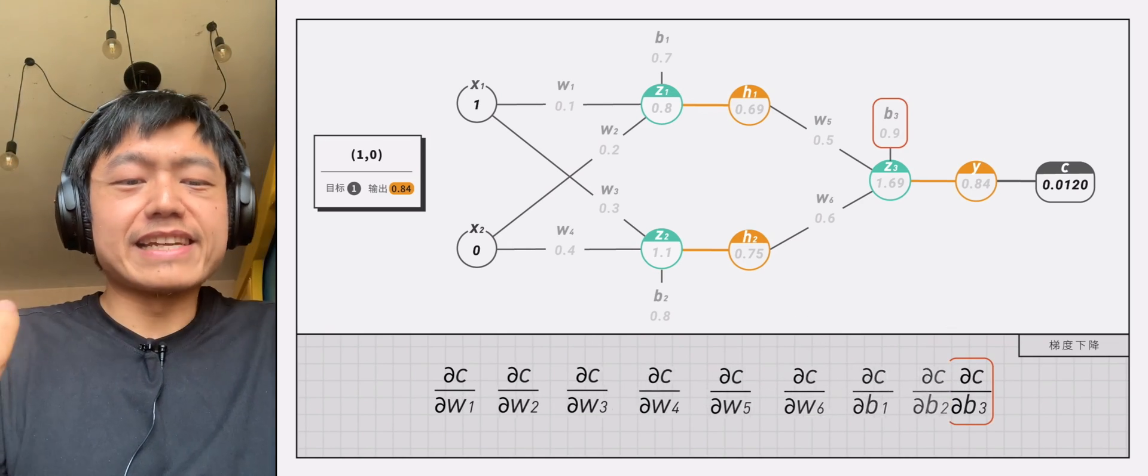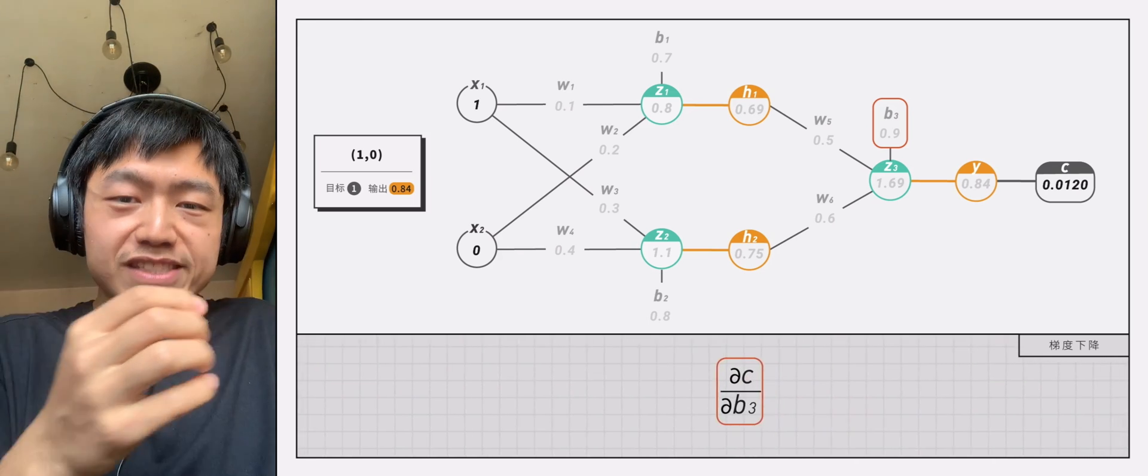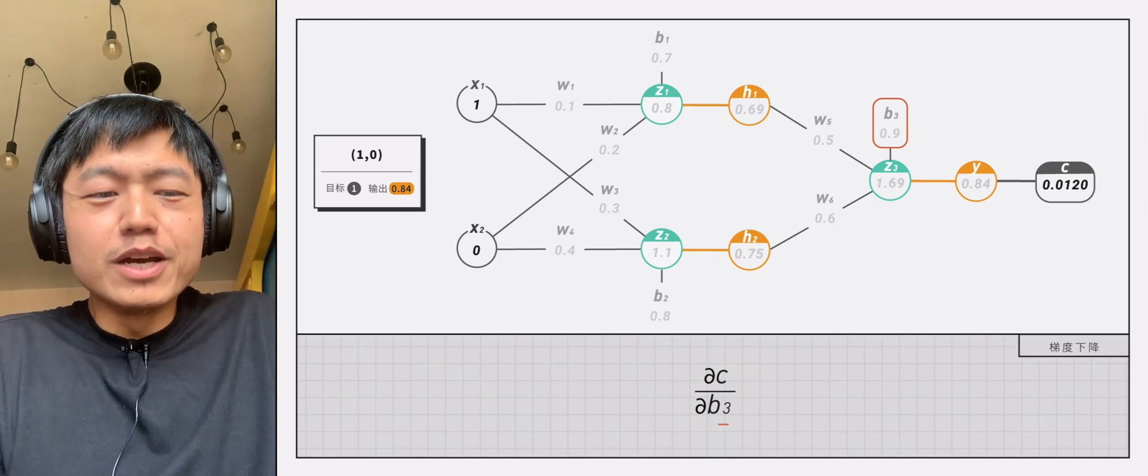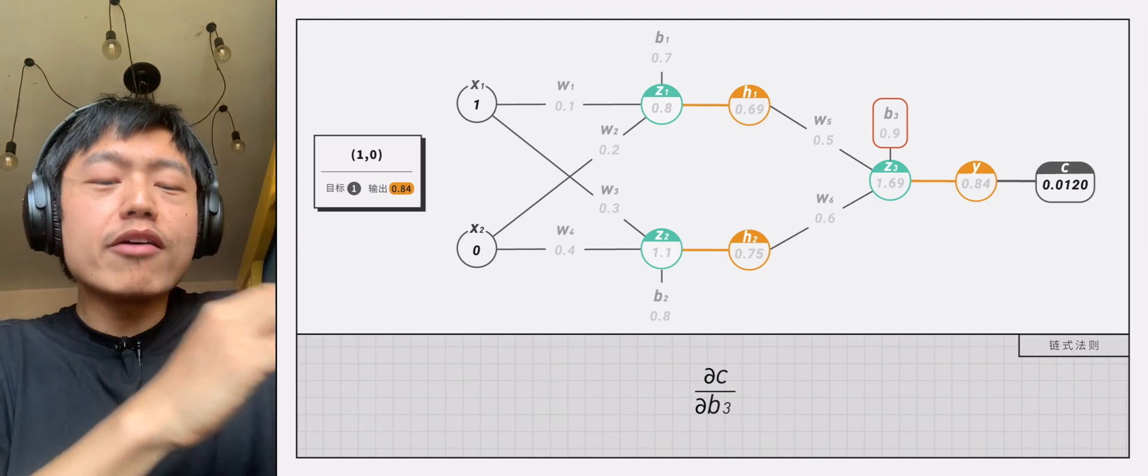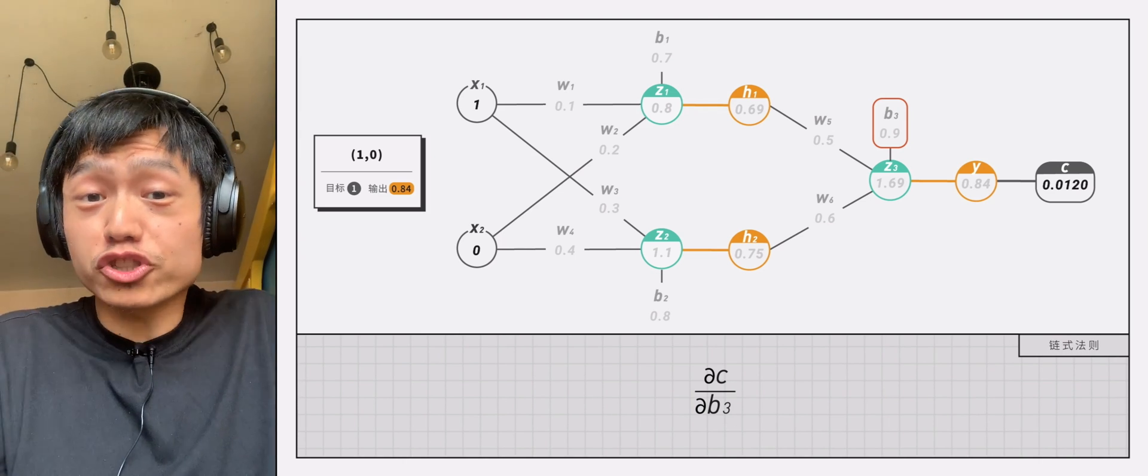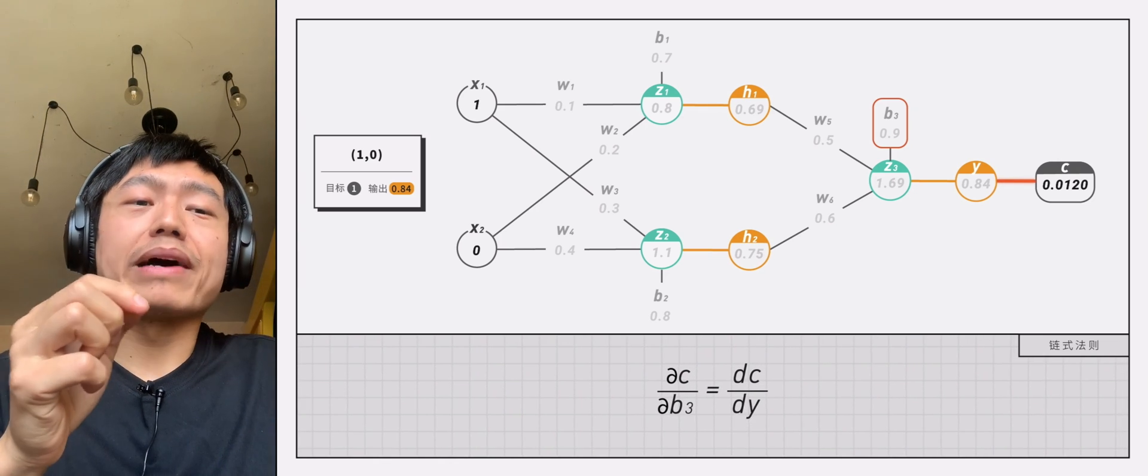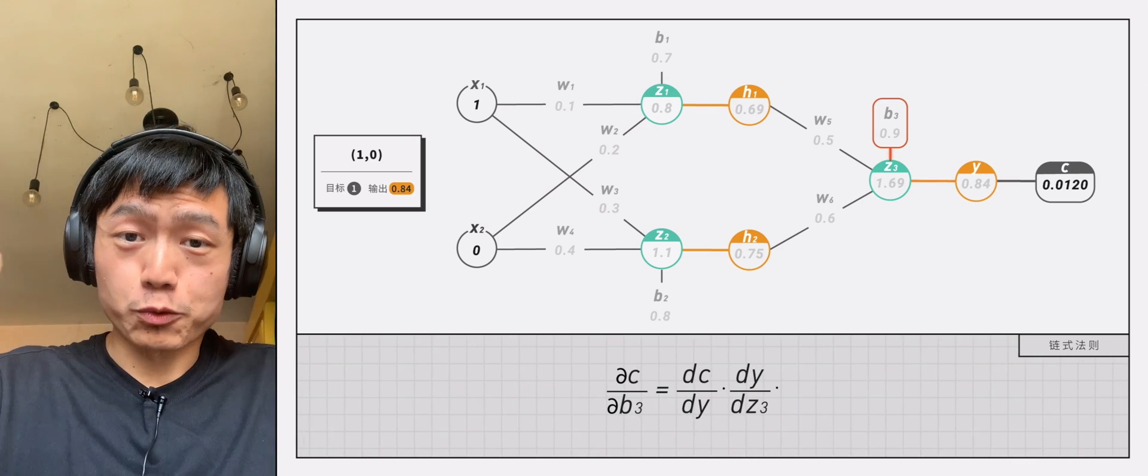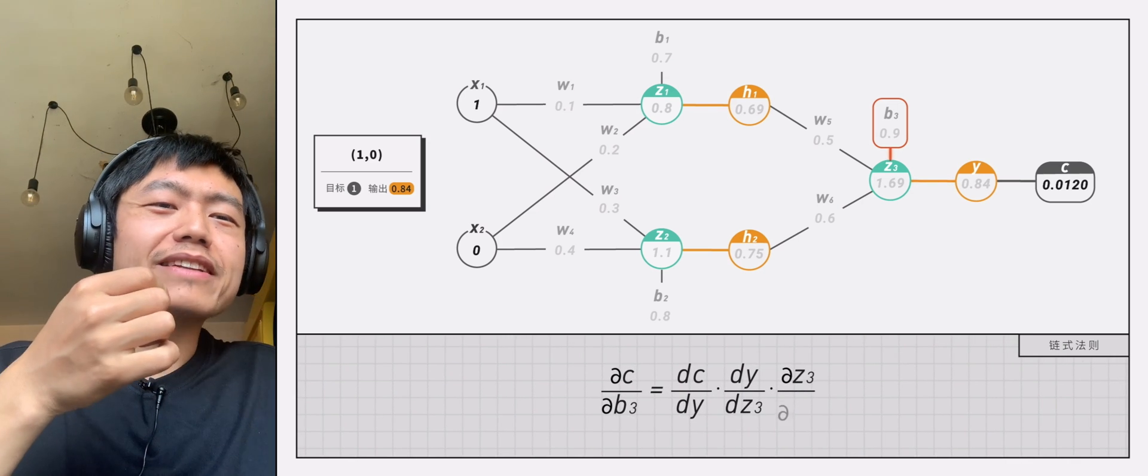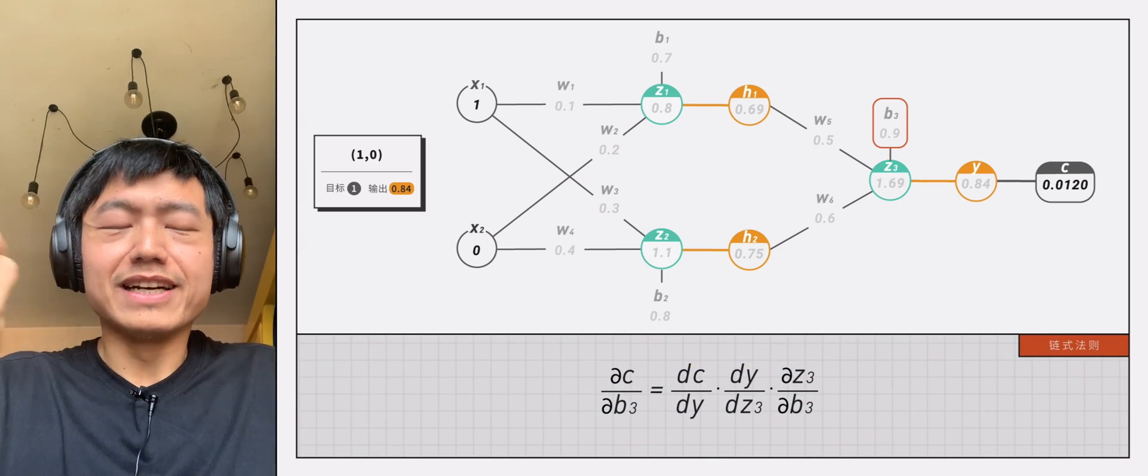Take b3 as an example. To calculate the partial derivative of c to b3, we have to use the chain rule to find the derivative of the compound function. That is to find dc divided by dy times dy divided by dz3 multiplied by dz3 divided by db3. Among them,